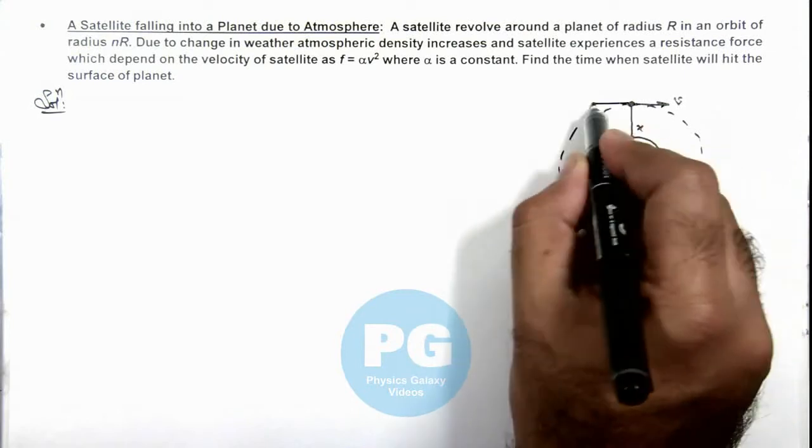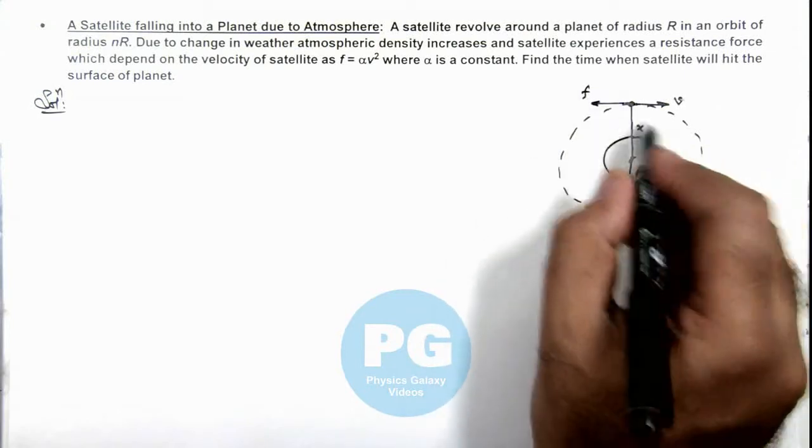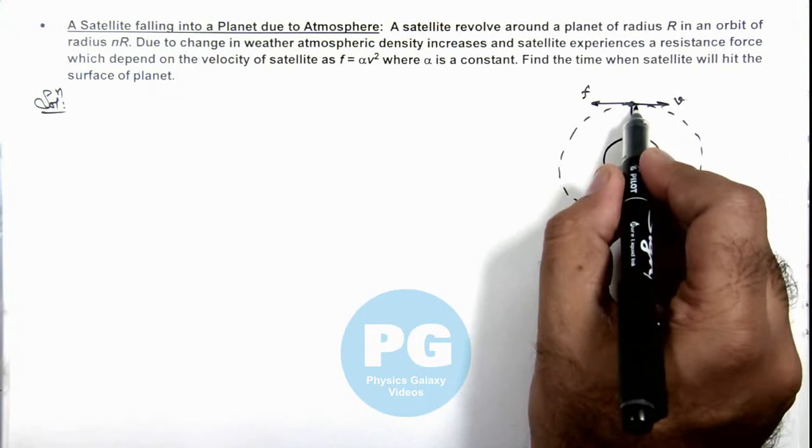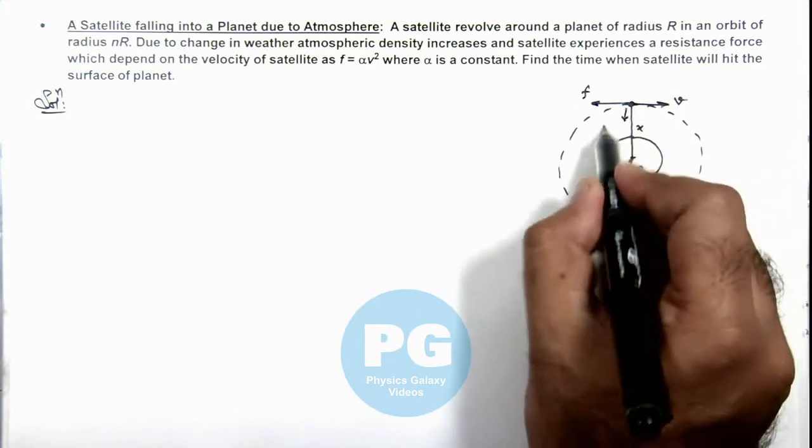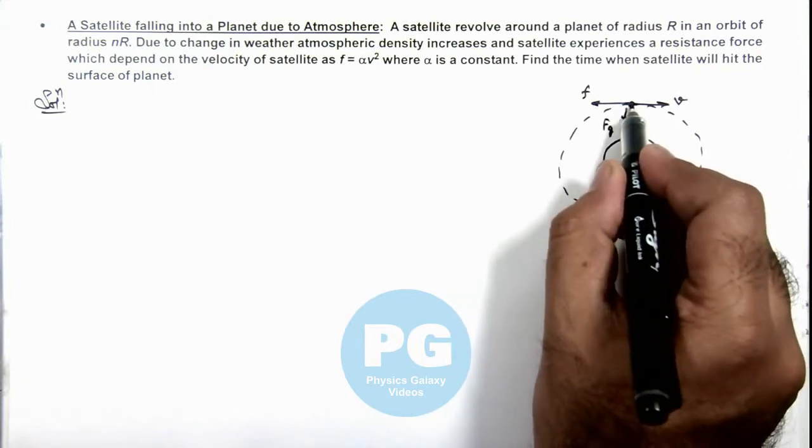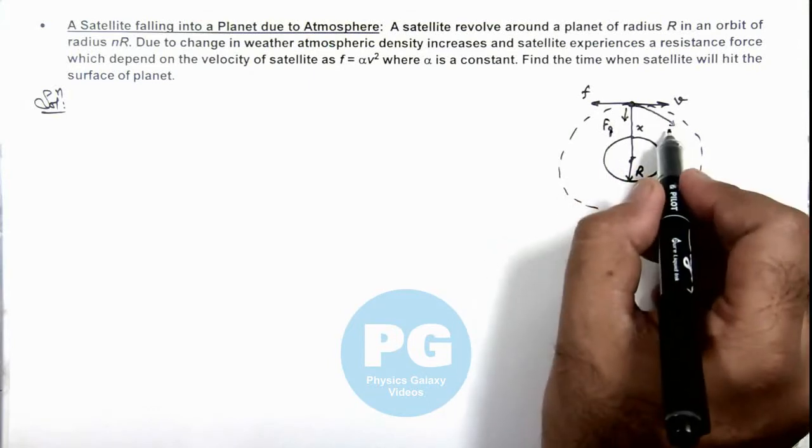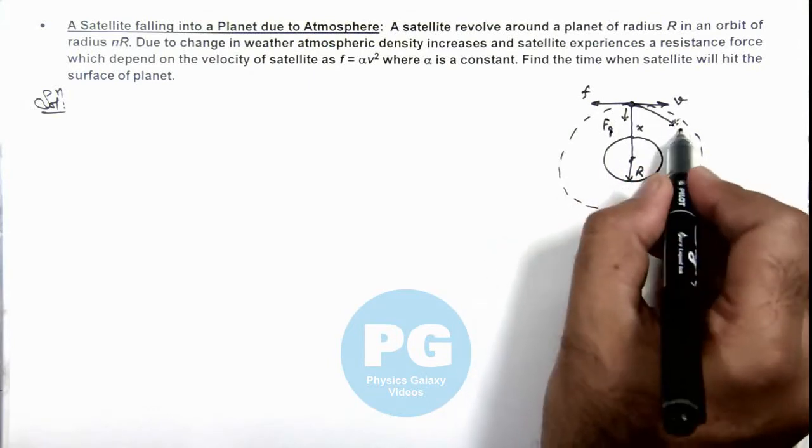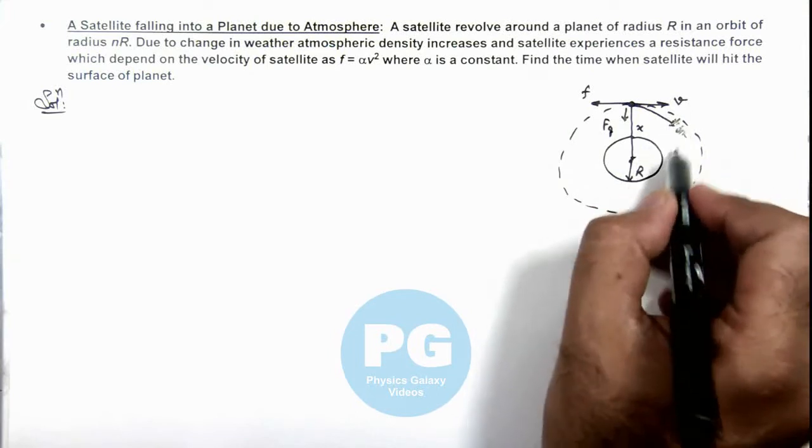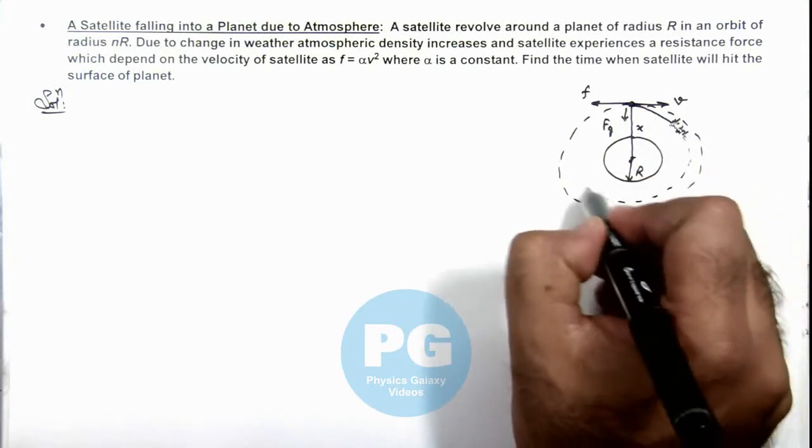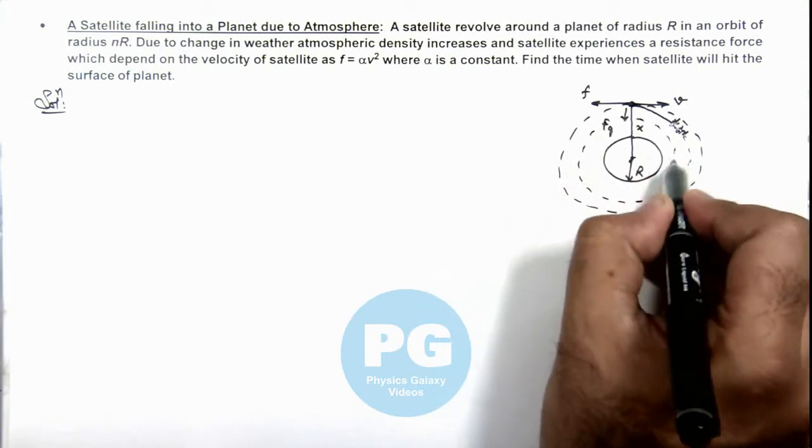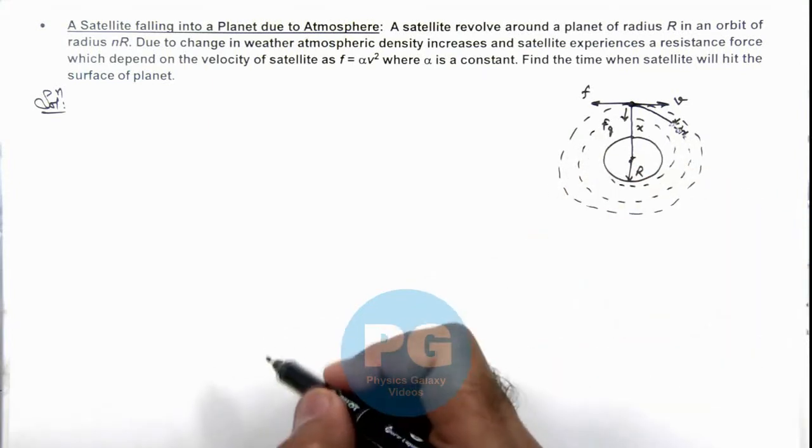Then its resistance force is acting in opposite direction due to which its speed increases. Due to the gravitational force on it, its radius also decreases by some value. We can say its radius gradually decreases by dx, dx, dx and so on and follows a spiral path, gradually coming close to the surface of the planet.